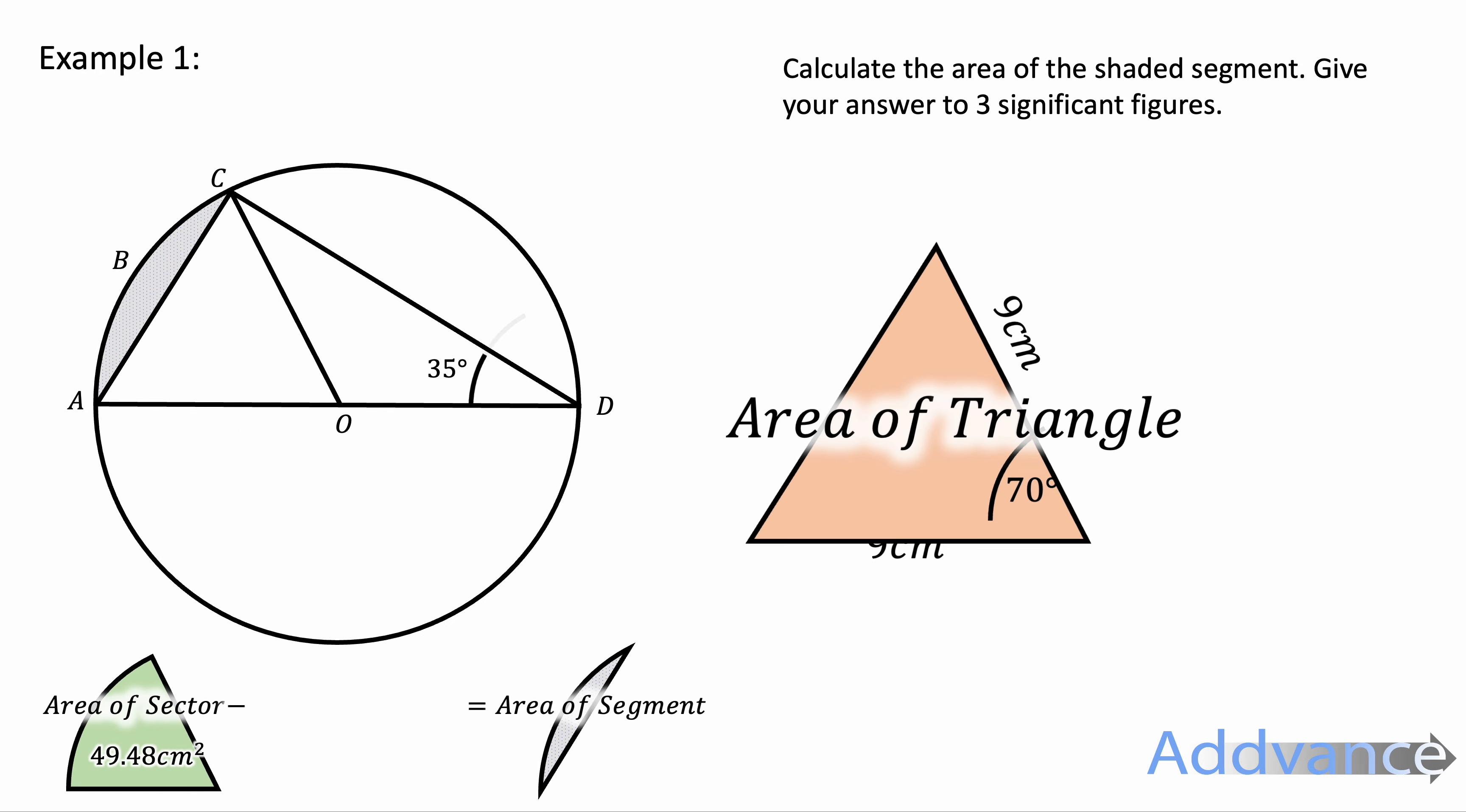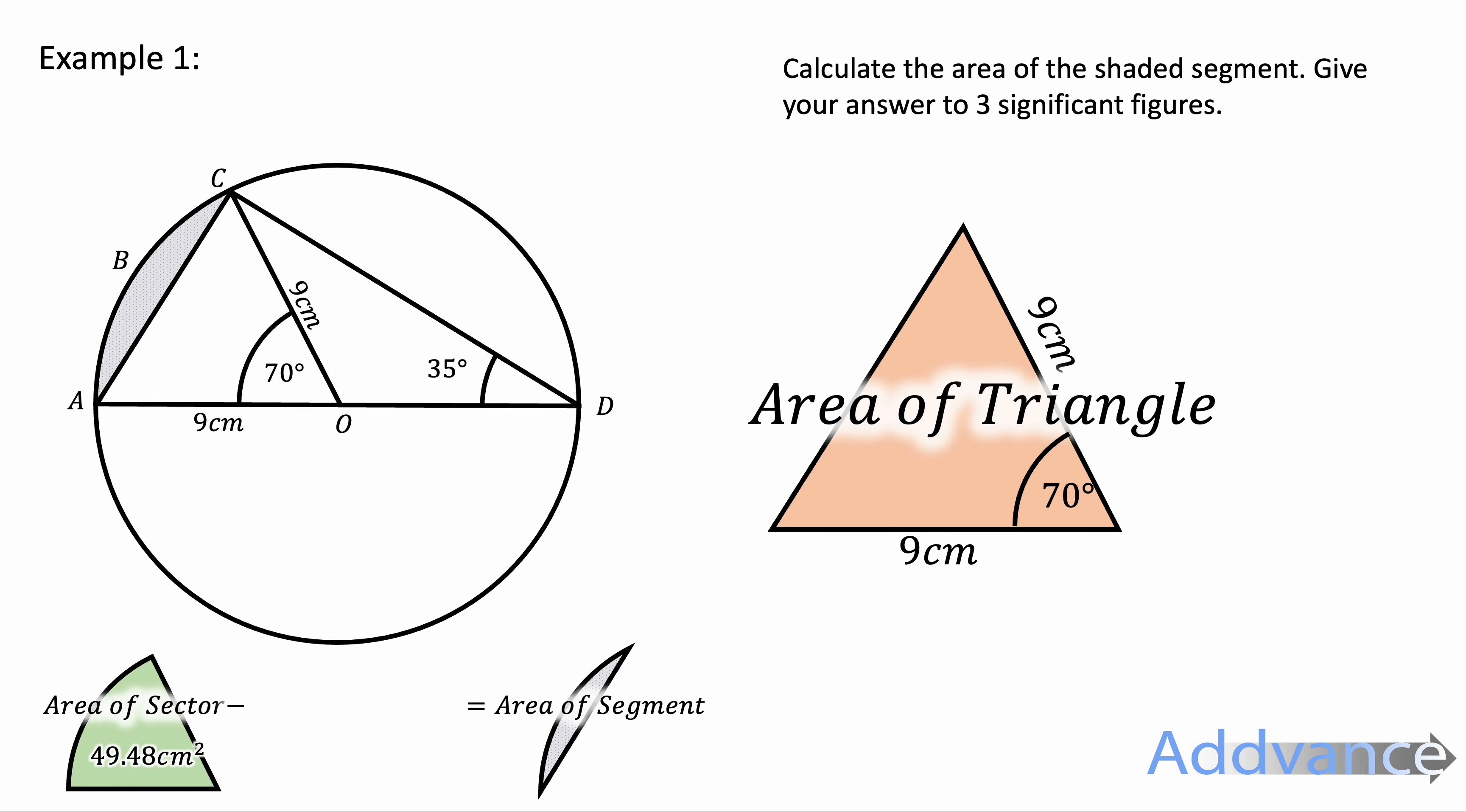Now for the area of a triangle. This has side lengths of 9 and 9 and an angle of 70. I'm going to use the formula half a b sin c. This is the formula in GCSE Maths and if you don't remember this, I will link the video for this in the description or at the top of the screen.